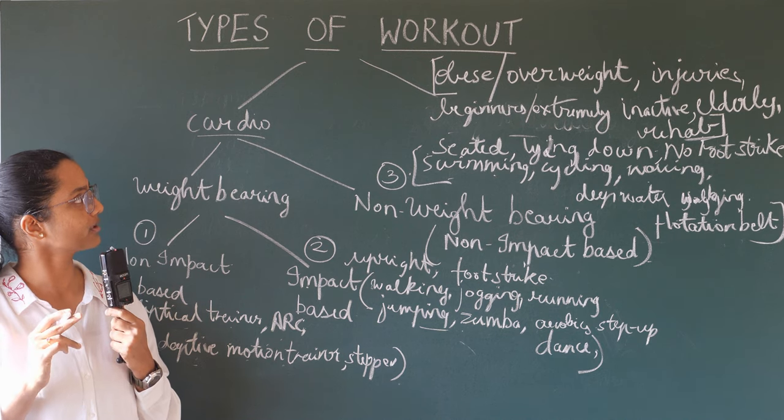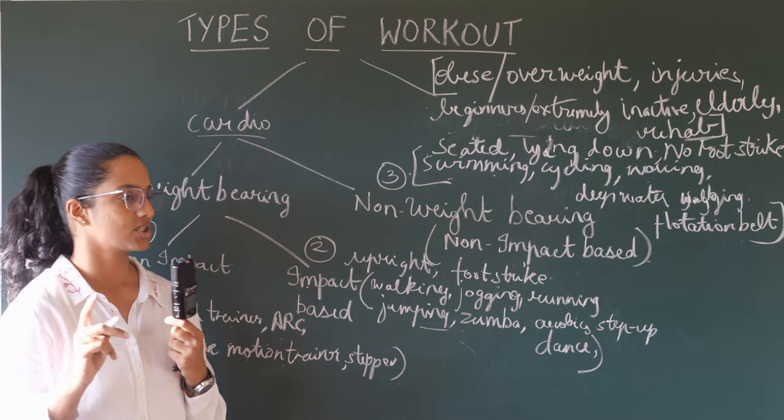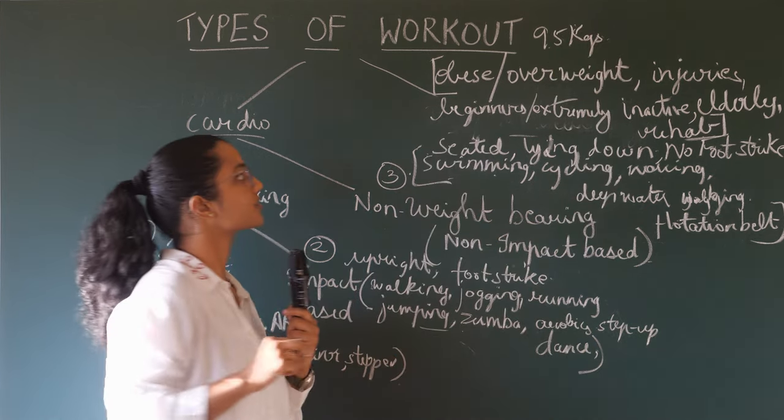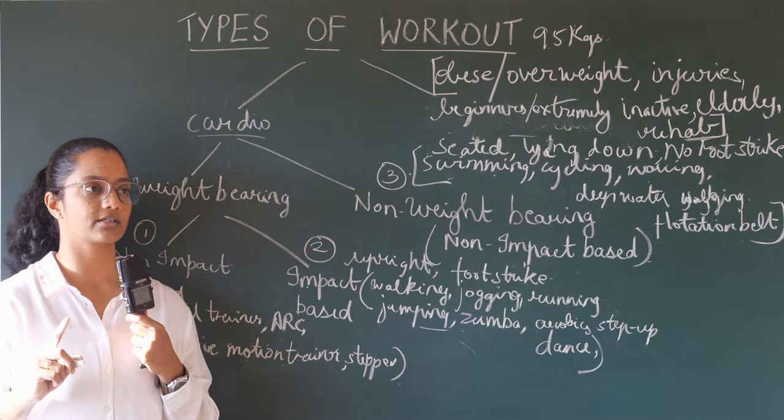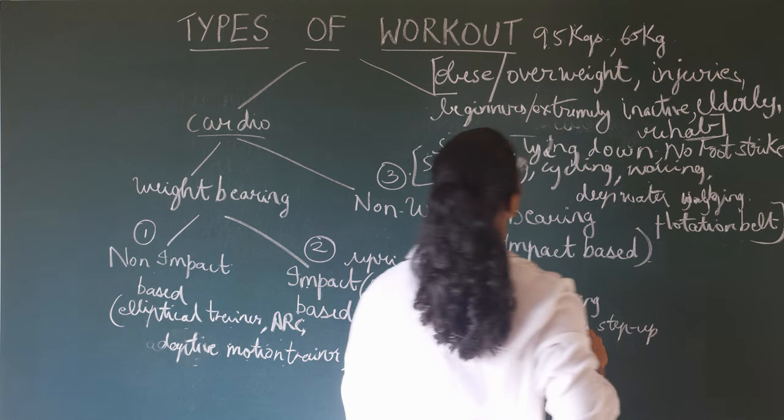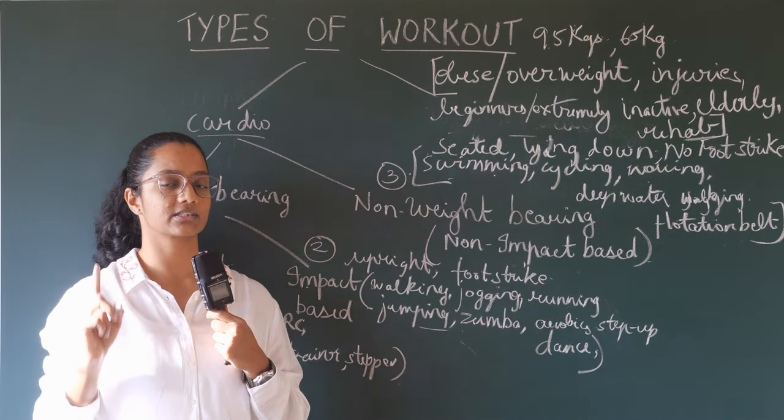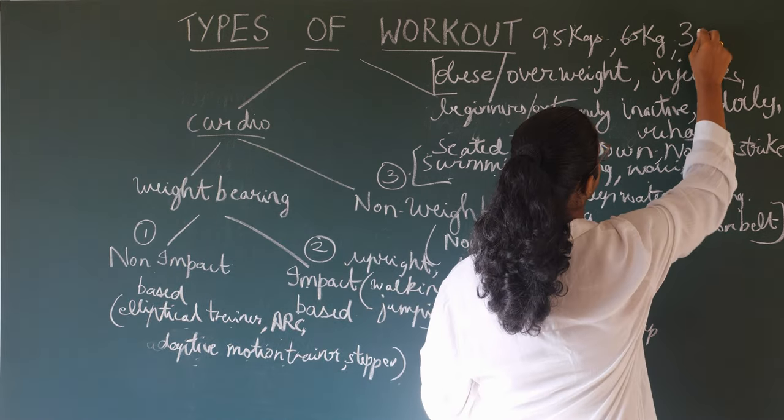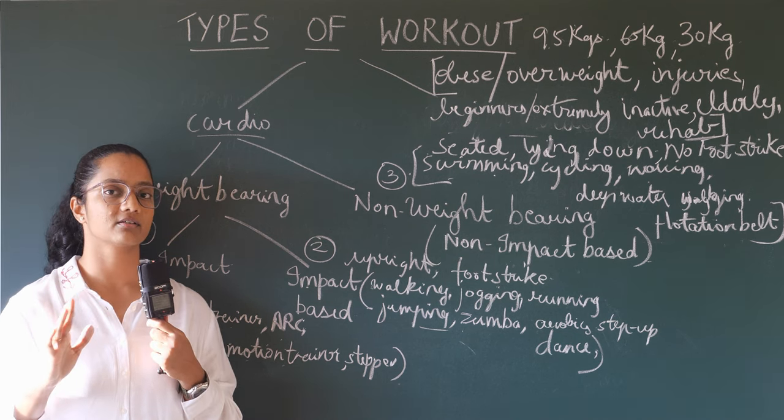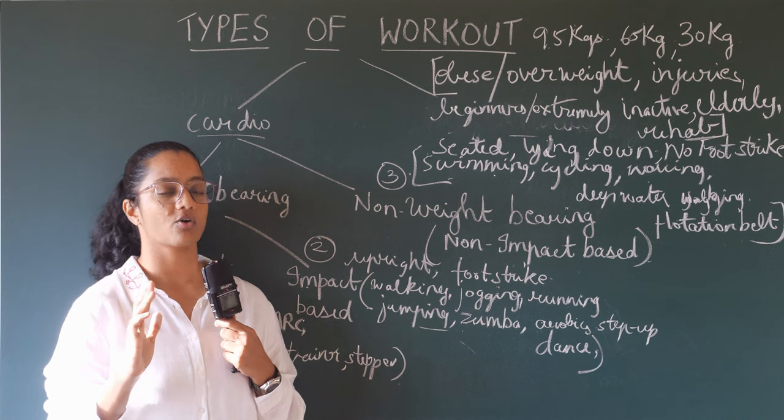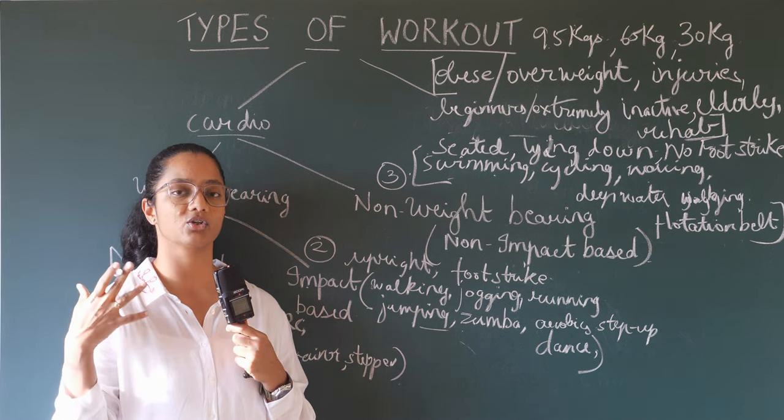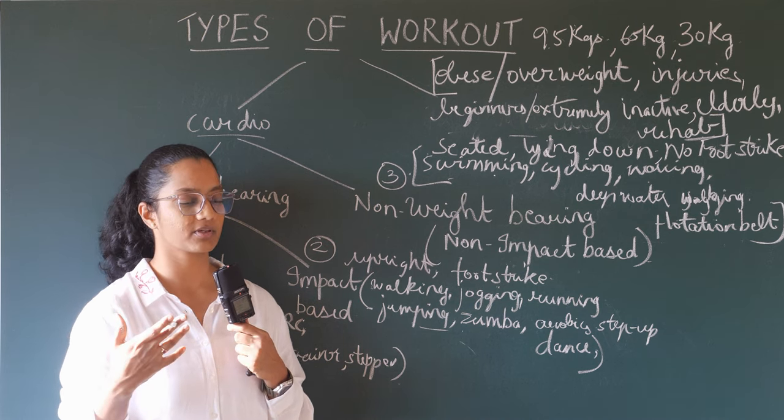Consider a person who is obese. Say she weighs around 95 kgs. As per ideal body weight, she is supposed to be 65 kgs. This lady is 30 kgs overweight. In reality, this lady is carrying 30 kgs of extra weight on her body every day. This extra weight is definitely a load on the joints.